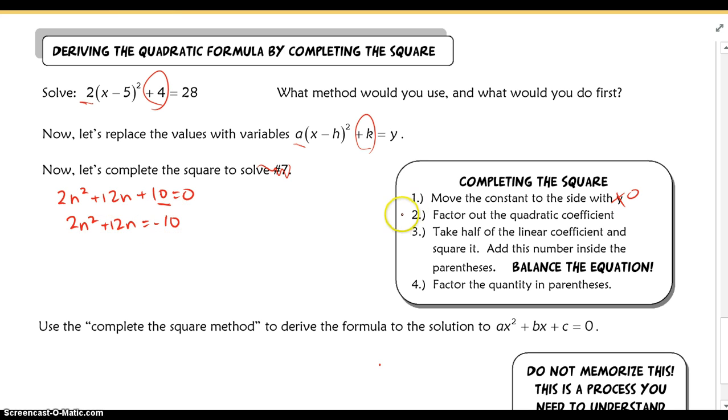And now I can take step 2, which is to factor out the quadratic coefficient. So, in this case, the quadratic coefficient is that 2 here. So, I'm going to factor out the 2, and I'm left with n squared plus 6n equaling negative 10.